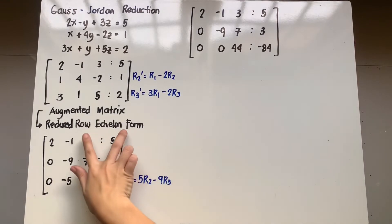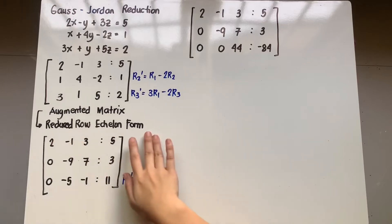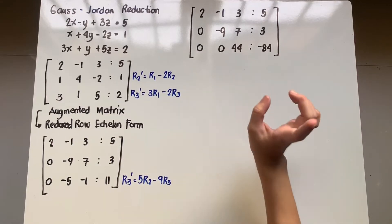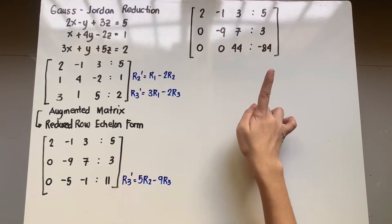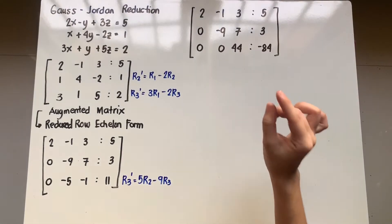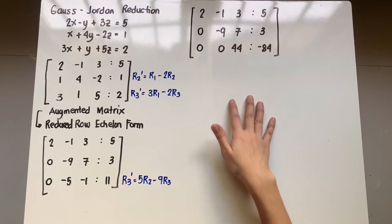So yung row echelon form natin nagmuka siyang upper triangular matrix, tama ba? For reduced row echelon form, the idea here is dapat daw po yung ating leading coefficients are the only non-zero element in that particular row.